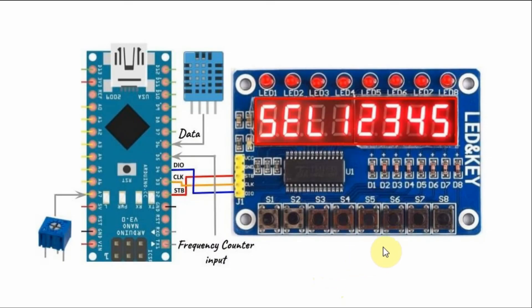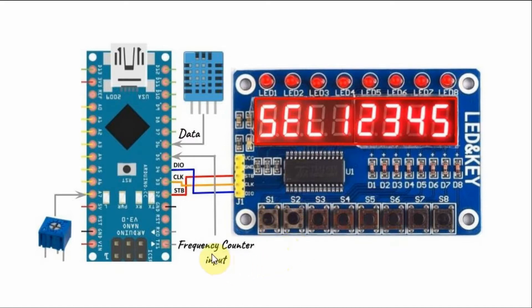In this project, the TM1638 is programmed to execute five different functions. On the screen we see an instruction which says select 1 2 3 4 5. Pressing S1 will execute the frequency counter program, and the input to the frequency counter will be through digital pin D5. Pressing S2 will display the temperature and humidity on the display, coming from the DHT sensor connected to digital pin D6 of the Arduino.